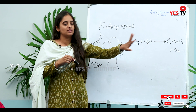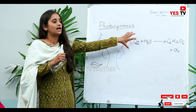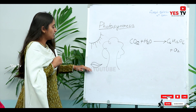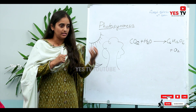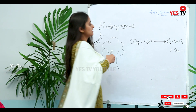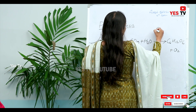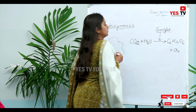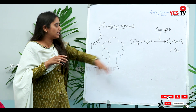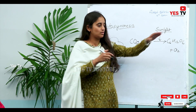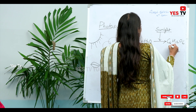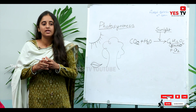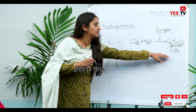This is the simple photosynthesis reaction in which carbon dioxide and water inside the leaves, in the presence of sunlight — without sunlight, this process does not occur — the plants synthesize C6H12O6, which is nothing but glucose, and also release oxygen.